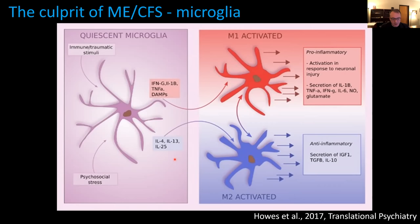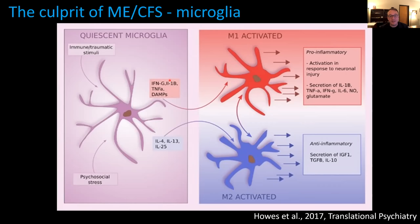When activated, microglia pump out tons of pro-inflammatory factors — and these are what make you feel horrible. This is by design: when you get sick, activated microglia pump out cytokines to make you rest and conserve resources for fighting infection. It makes it almost impossible to exert yourself, makes it hard to think, hard to do anything, and creates significant fatigue.